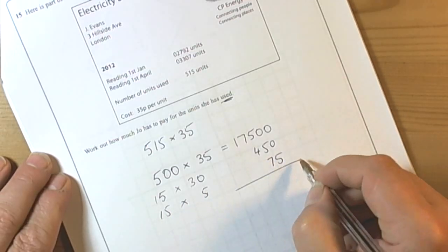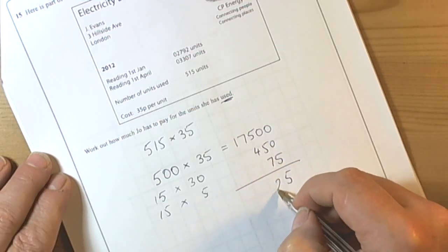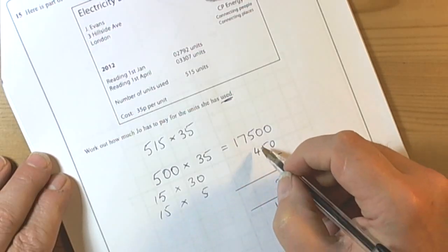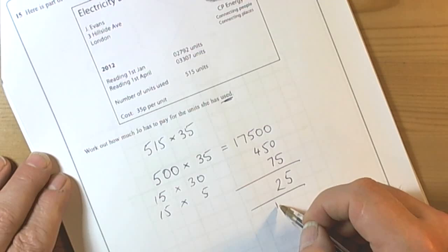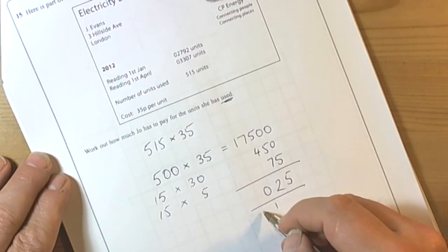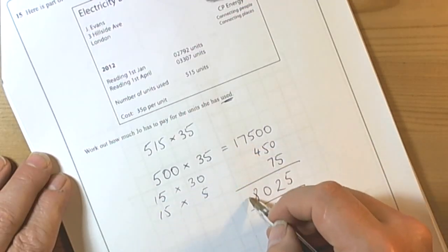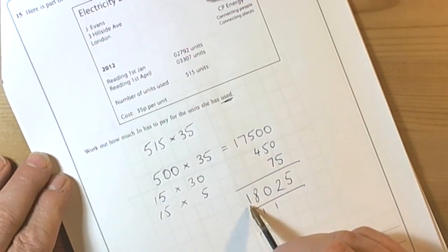So we can add those up: 5, 2, 1 to carry over, 5, 4, 9, 10, 1 to carry over again, 7 and the 1 makes 8, and the 1. So we have got 18,025.